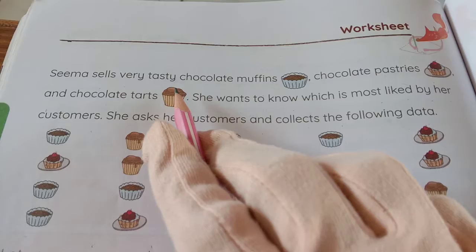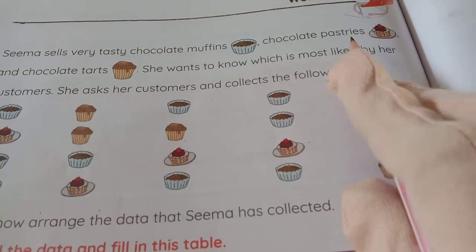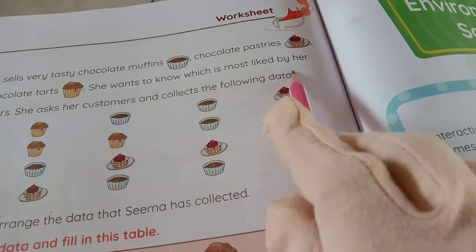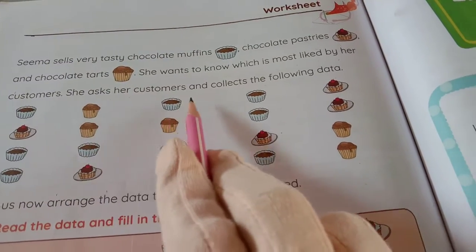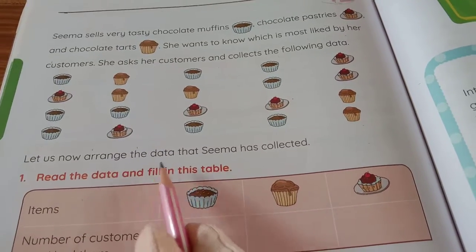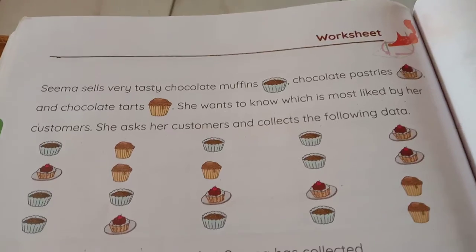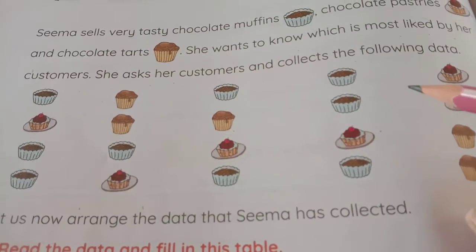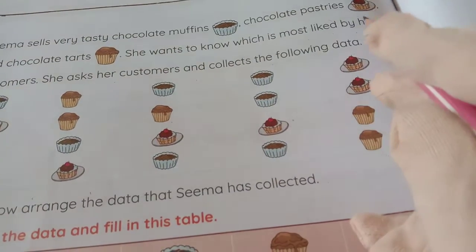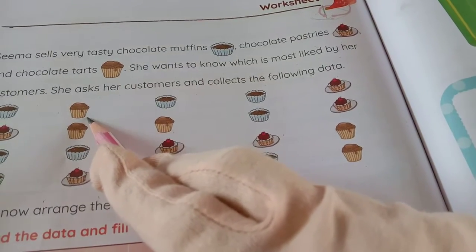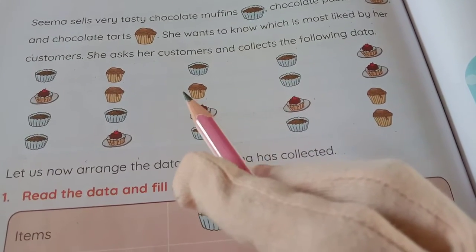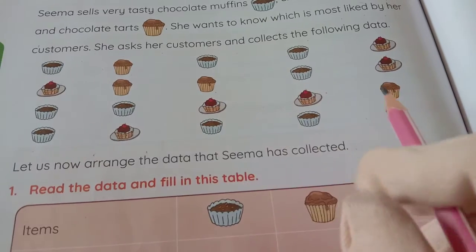Sima sells very tasty chocolate muffins, chocolate pastries, and chocolate tarts. She wants to know which is most liked by her customers. She asks her customers and collects the following data. Let us now arrange the data that Sima has collected. She knows which items are liked by customers, so she collected that data.